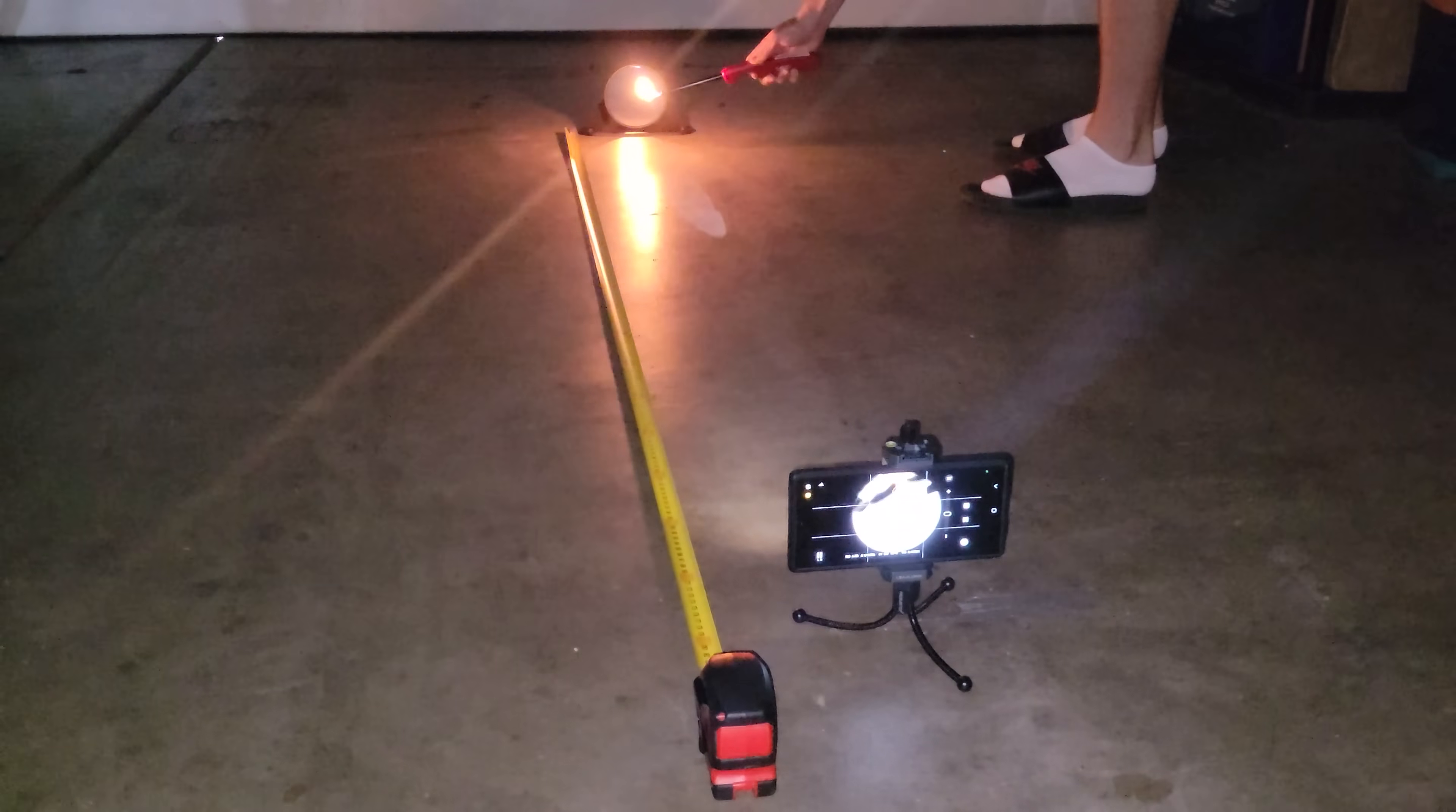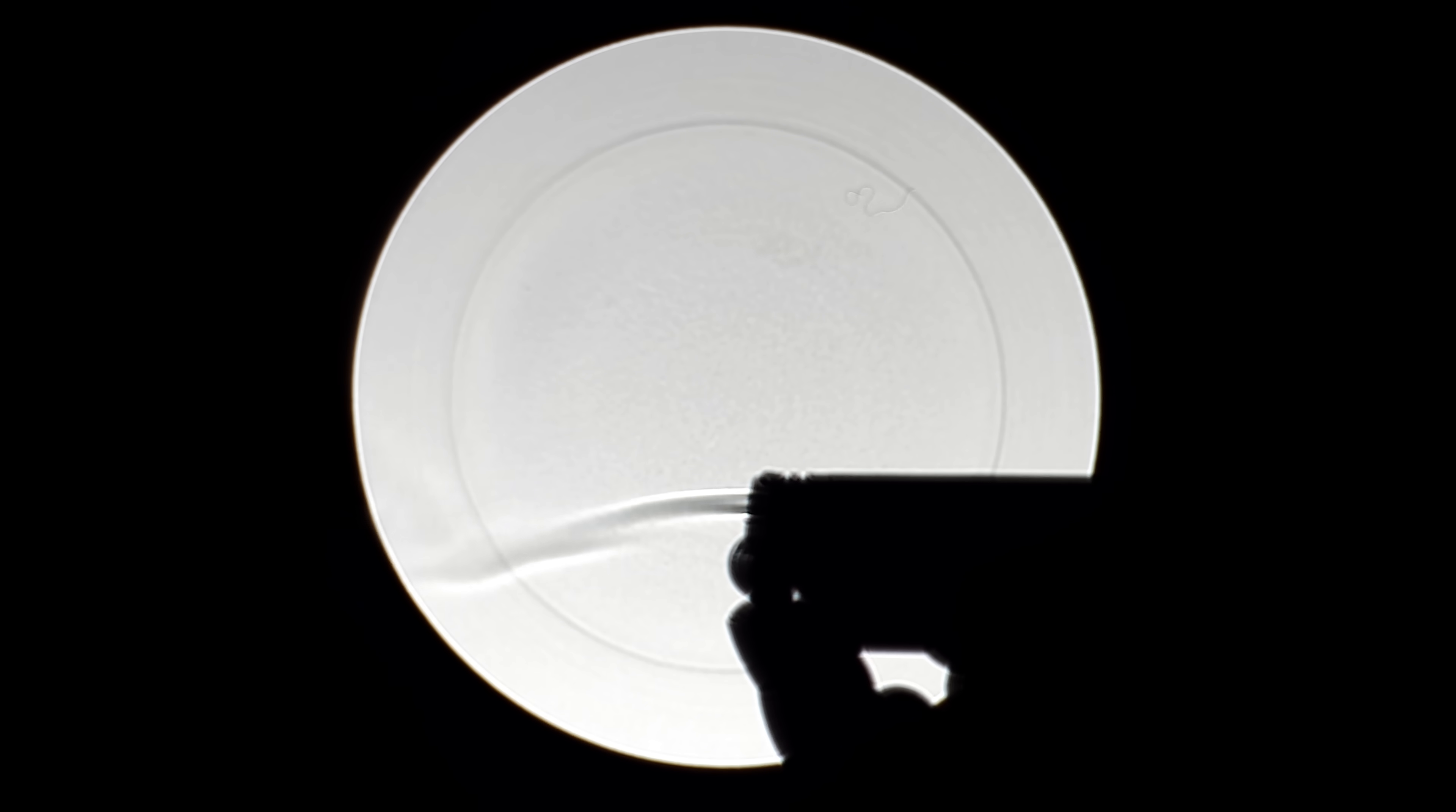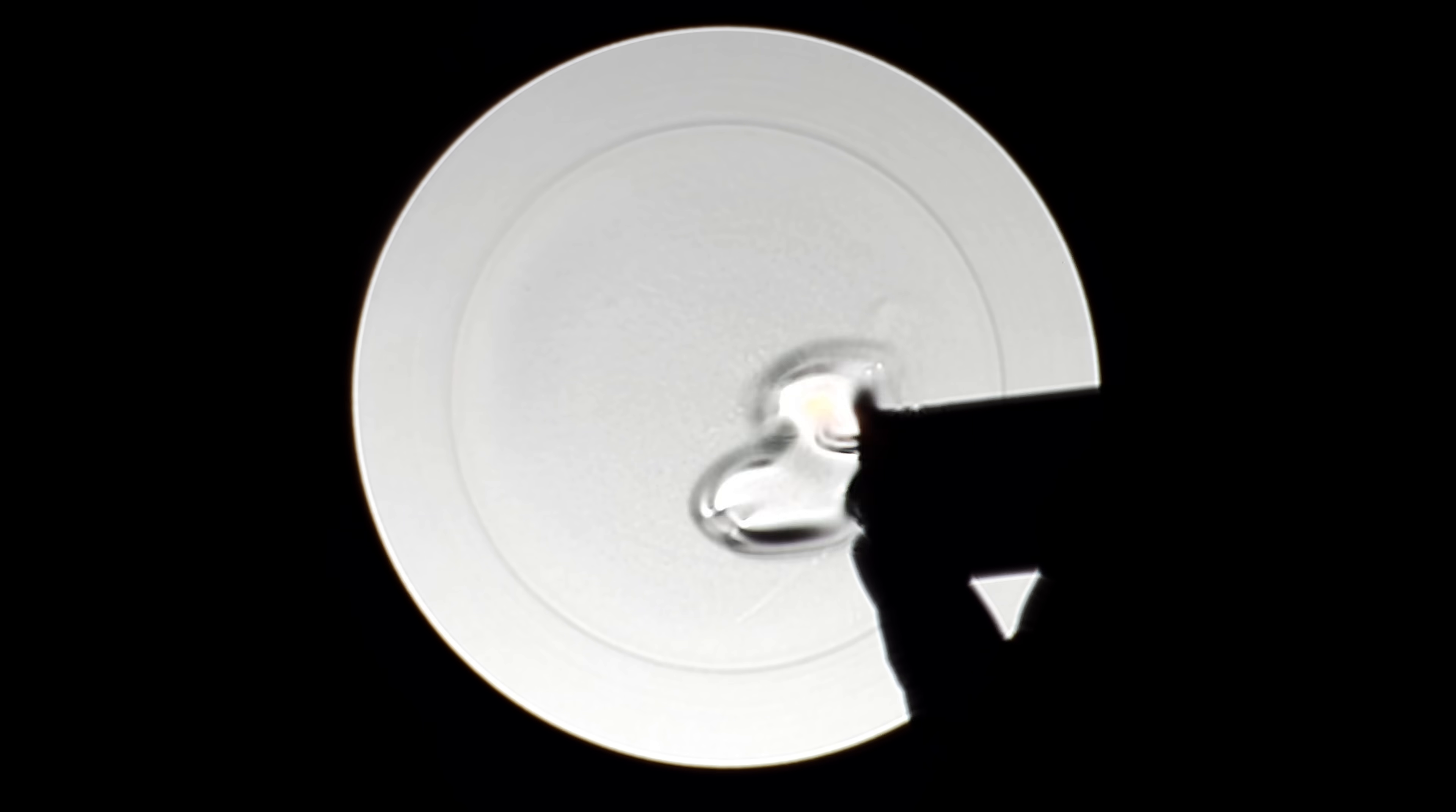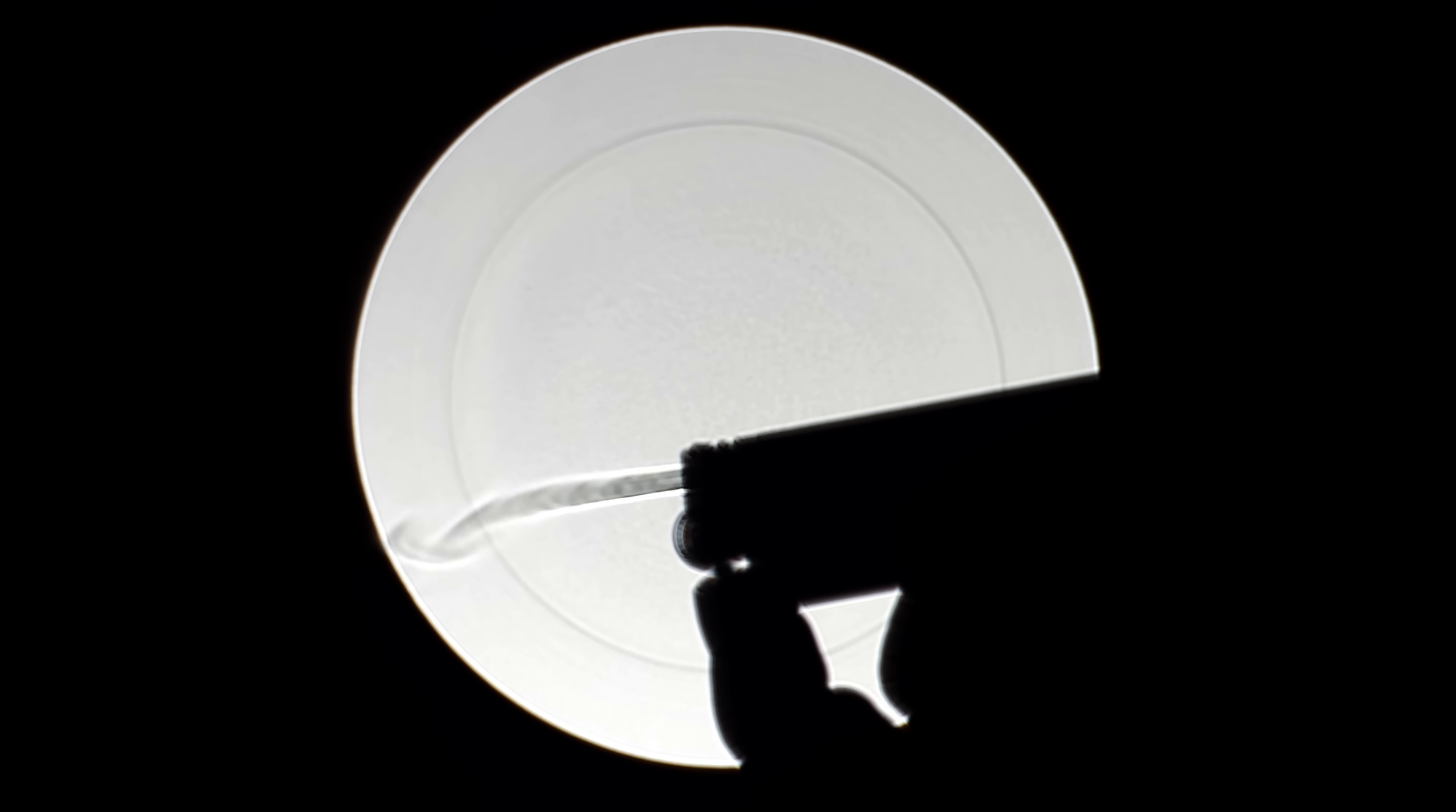Now when I put something like a lighter in front of the camera you can easily see the butane and it looks quite beautiful. When solid objects are placed in front of the lens they directly block that light and you see a silhouette. However when something transparent with a different density like butane is in between, the light refracts as it passes through and that change of direction causes some light to miss the lens resulting in the distinct dark outline.